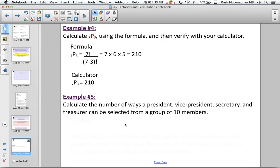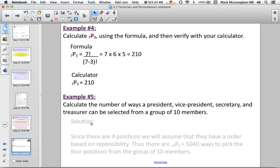Okay, so calculate a number of ways of picking a president, vice president, secretary, and treasurer from a selected group of 10 members. So say we have the council, and we need to make the administration. So the solution. Since there are four positions, we assume that there are order based on responsibility, the president being the most responsible, the treasurer having the least responsibility. Okay, thus there is 10P4, which works out to 5,040 ways to pick the four positions in a group of 10 people.